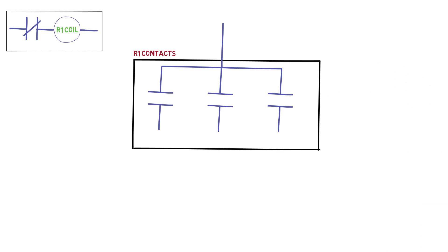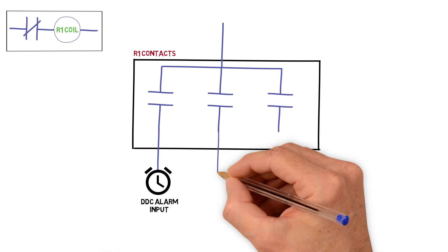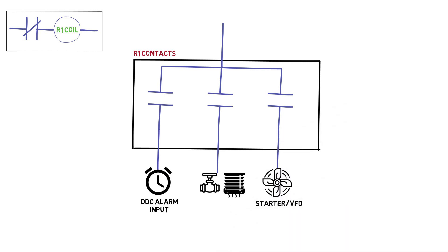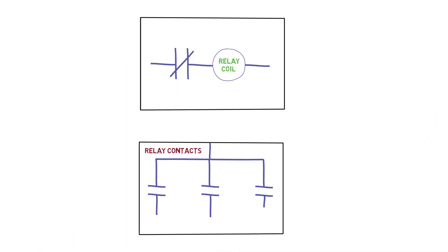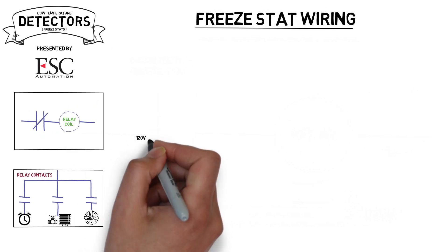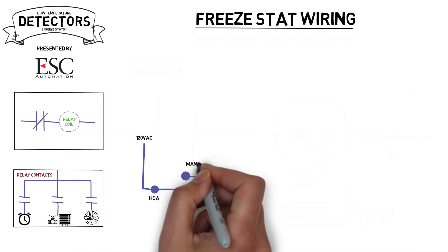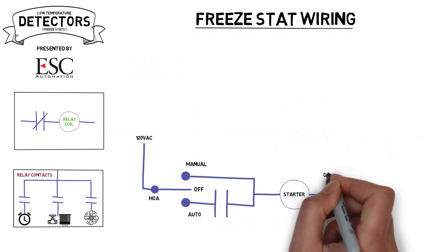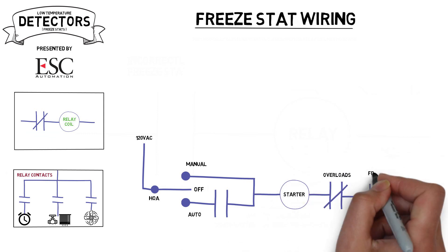The first contact is for the DDC alarm. The second connects to the heating control valve and mixed air damper system, and the third is for the fan starter or VFD. It is also extremely important that the freeze relay contact is wired into the safety circuit in series with the overloads or shutdown button, otherwise the entire system will not function as intended.